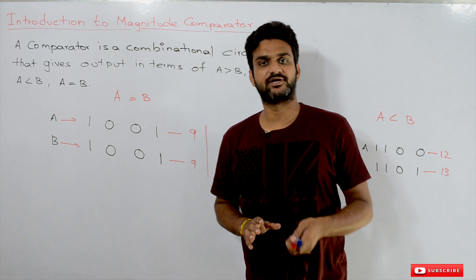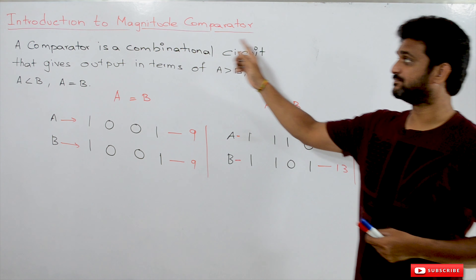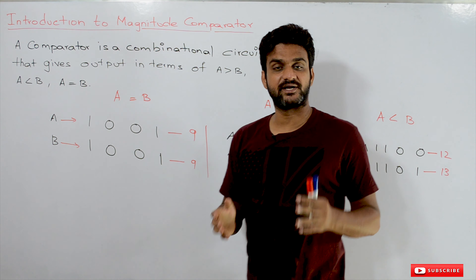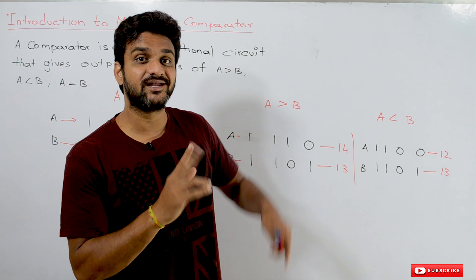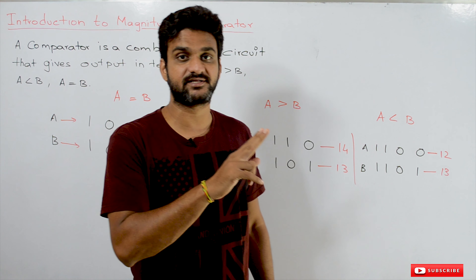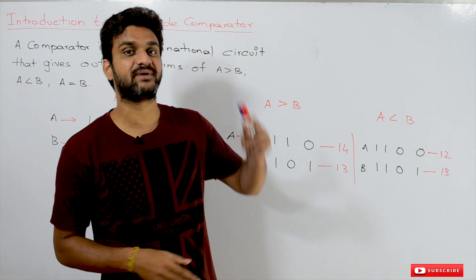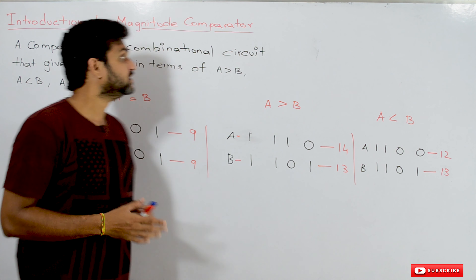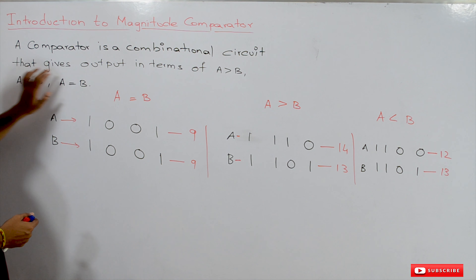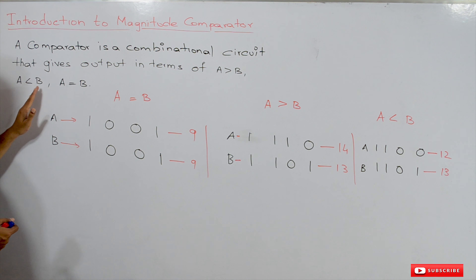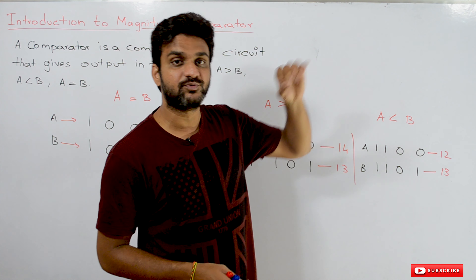Hi, welcome to Learning Monkey. I am Vikram. In this class we will try to understand an introduction to magnitude comparator. This is a combinational circuit which is going to find the relationship between two numbers — whether they are greater than, less than, or equal to. The comparator is a combinational circuit that gives the output in terms of A greater than B, A less than B, or A equal to B. So the comparator is going to have three outputs.